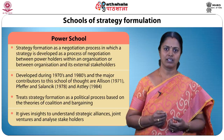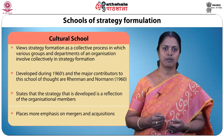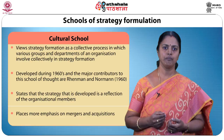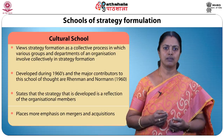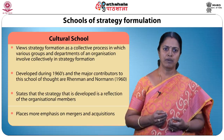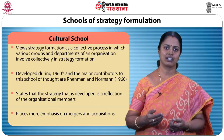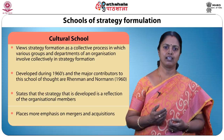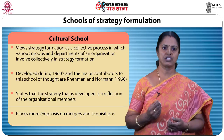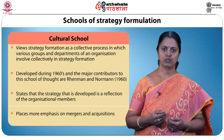The cultural school views strategy formation as a collective process in which various groups and departments of an organization are involved collectively. Developed during the 1960s, major contributors are Henman and Norman. The school states that the strategy developed is a reflection of the organizational members. It explains the role of social processes, values, and beliefs in strategy formation, and helps explain the logic behind resistance to strategic change. The school places more emphasis on mergers and acquisitions.